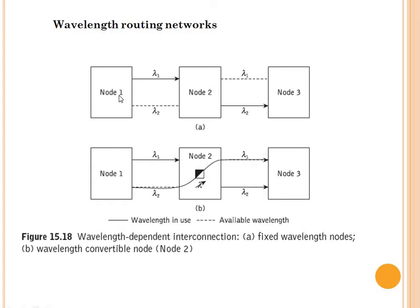If network node 1 wants to connect with node 3, there is no single wavelength channel to establish a light path between them. When a light path cannot be established using a single wavelength channel, such a situation is referred to as the wavelength continuity constraint.